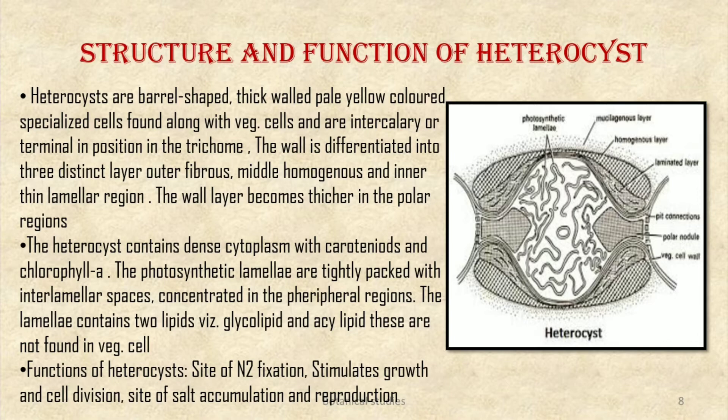The heterocyst contains dense cytoplasm with carotenoids and chlorophyll a. The photosynthetic lamellae are tightly packed, with interlamellar space concentrated in the peripheral regions. The lamellae contain two lipids: glycolipid and acyl lipid. These lipids are not found in the vegetative cells.